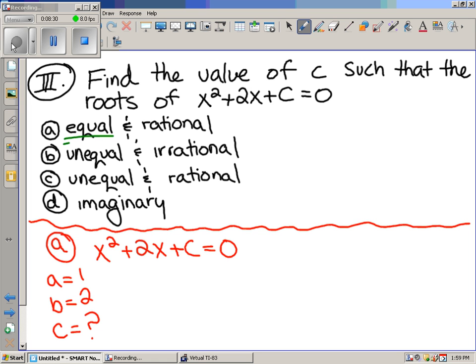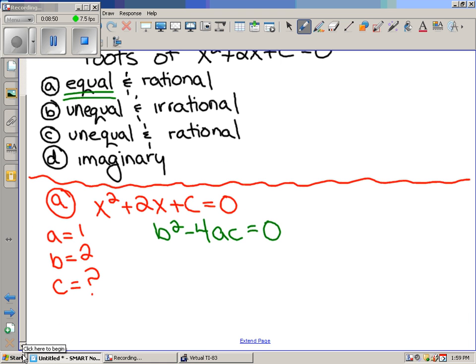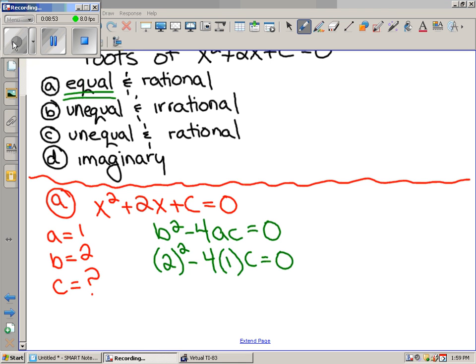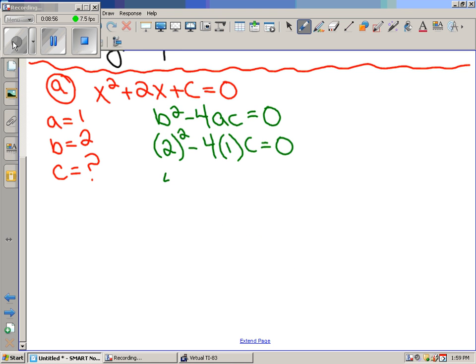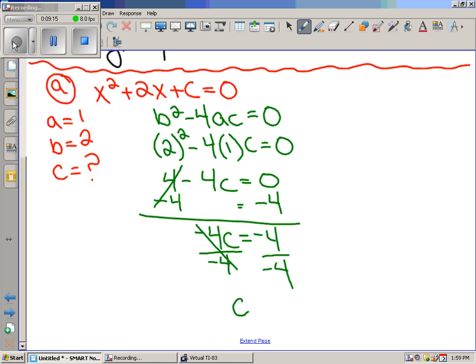If the roots are equal, what do you know about the stuff underneath the square root? What's it got to be? Oh, zero. It's got to be zero. And, that means that B squared minus 4AC has to be equal to zero. And, so, guess what you got to do? Just plug it in. You're right. We don't know what C is. It doesn't matter. Check this out. You guys are so smart. You probably didn't even need to solve this. We got negative 4C equals negative 4. Divide by negative 4. Divide by negative 4. And then, C equals 1.